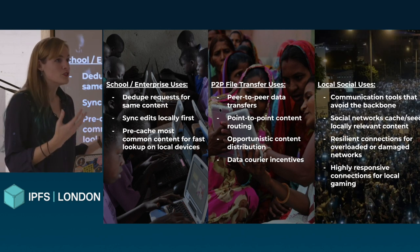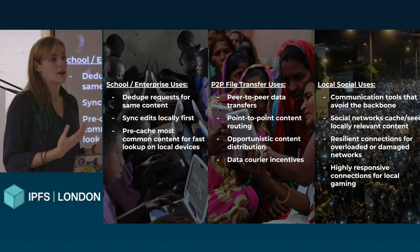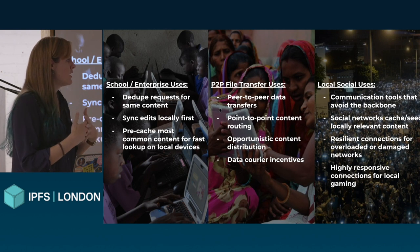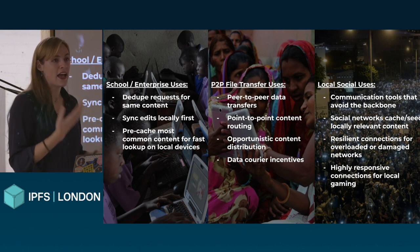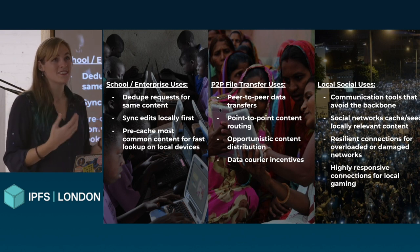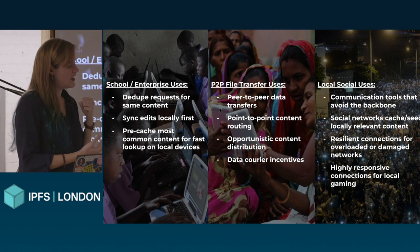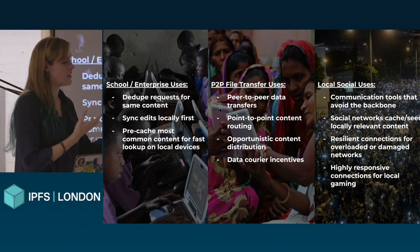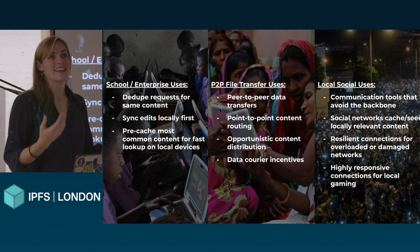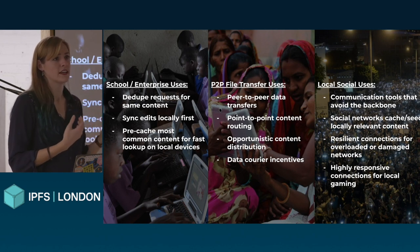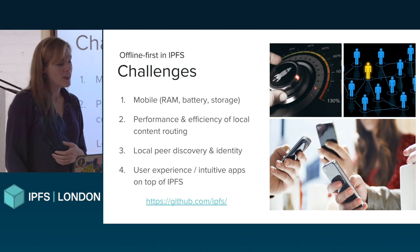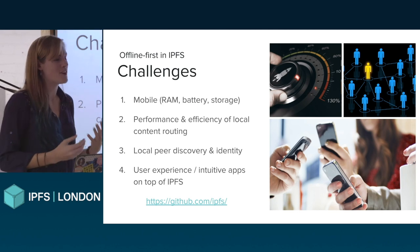For local social use cases, it's all about communication tools that avoid the backbone to connect people. There are social networks that can be cached or seeded locally, and resilient connections that are fault tolerant even in the face of natural disasters, outages, or attacks. For local gaming especially, it's important to have very fast connections — it's silly to route all that content far away if you want speed. But of course there are challenges. We're not quite there yet. There's still a lot of work to do before we can meet all these demands.